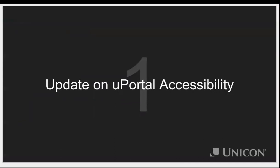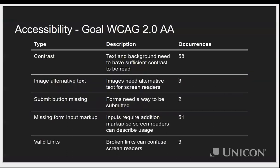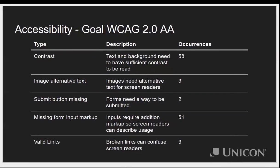Christian Murphy from Unicon here. For our accessibility audit, we set our goal as hitting the WCAG 2.0 double-A standard. As part of our audit we spent about 40 hours going through all the views and all the code in uPortal, identifying issues where we were falling short of that standard. The main issues we found included contrast issues and images without proper alternative text.